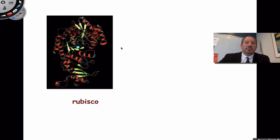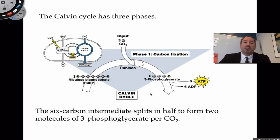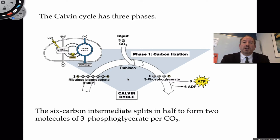CO2 and RuBP go into rubisco's active site and what comes out is the six-carbon intermediate. The Calvin cycle can be discussed in three phases: phase one is carbon fixation; phase two uses the reducing power of ATP and NADPH; phase three recycles RuBP — a regenerative phase.